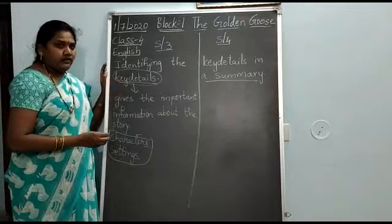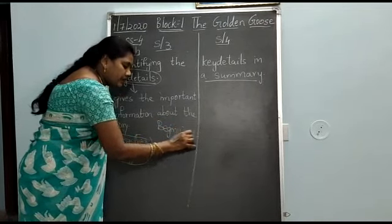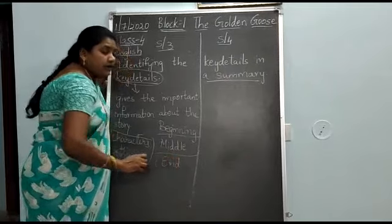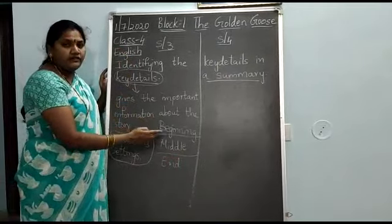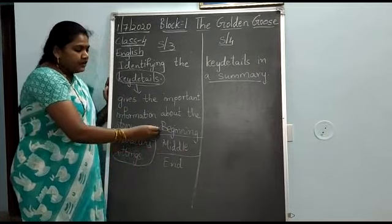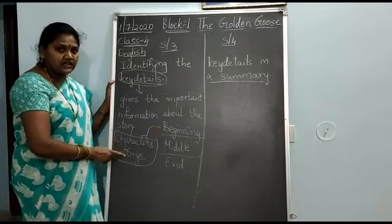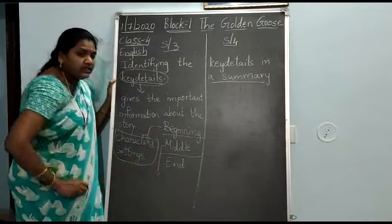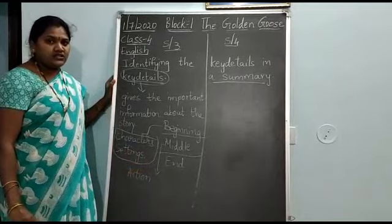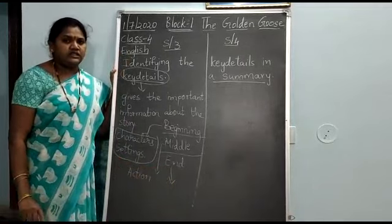This key detail we are having in every story — we have it in the beginning of the story, in the middle of the story, and at the end of the story. In the beginning, the important key details are about the characters and settings. In the middle, the key details tell about the action — that is the main important key detail which tells about the action in the story. At the end, what happened — that is the main important key detail in the story.